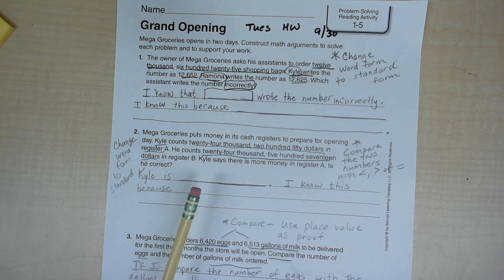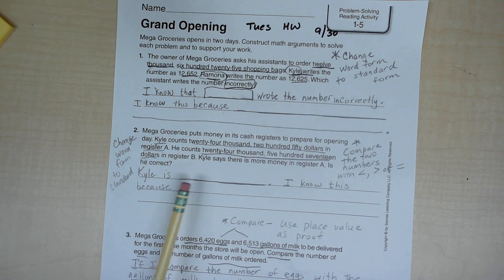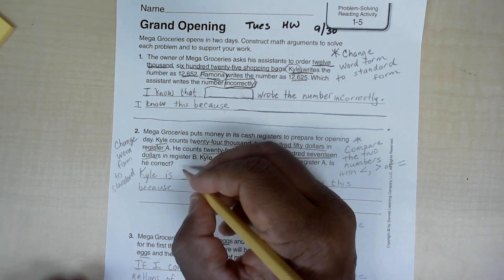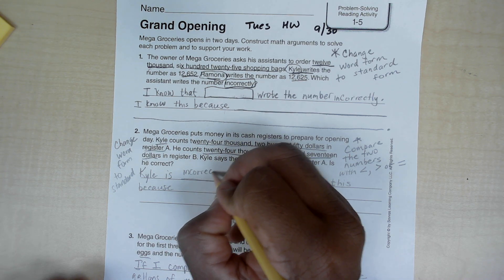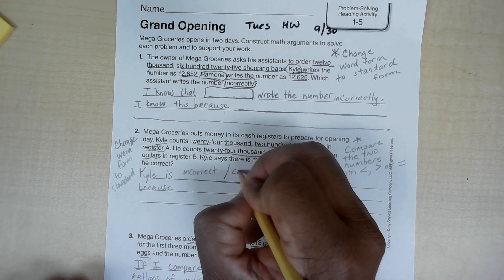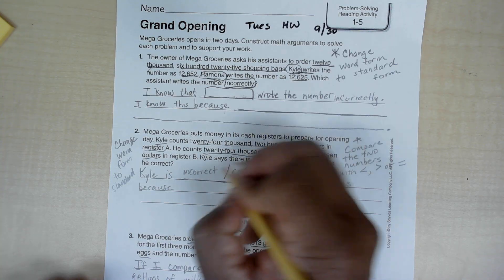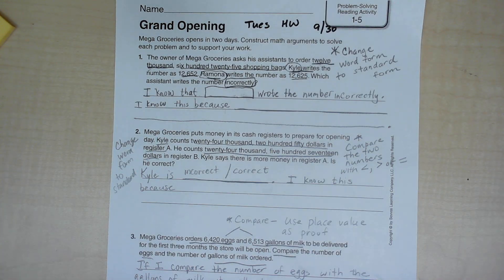In this box you're going to say Kyle is correct or Kyle is incorrect. Those are your two choices - incorrect or correct. You have to pick one. Don't like both, pick one. How do you know this? I know this because...